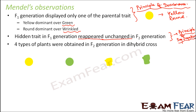Mendel found that four types of plants were obtained in the F2 generation in a dihybrid cross: round and yellow, round and green, wrinkled and yellow, and wrinkled and green. He had started with only two types — round and yellow, and wrinkled and green — but two new combinations appeared: round and green, and yellow and wrinkled.